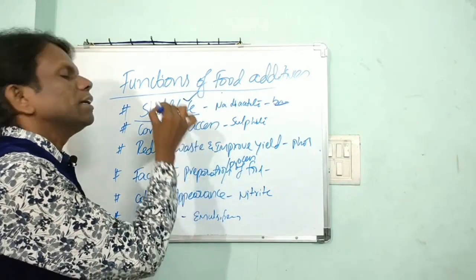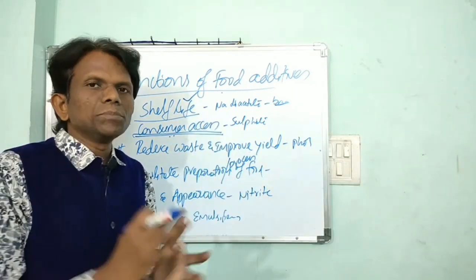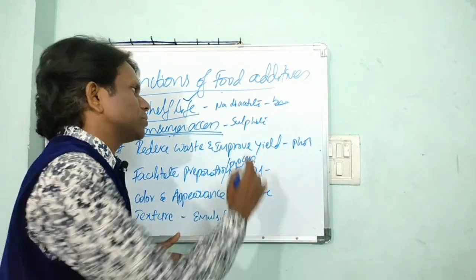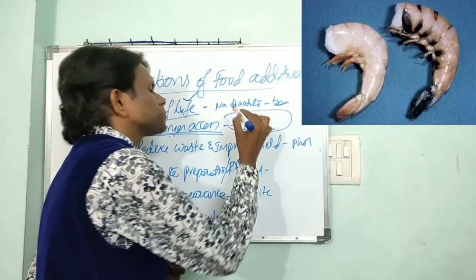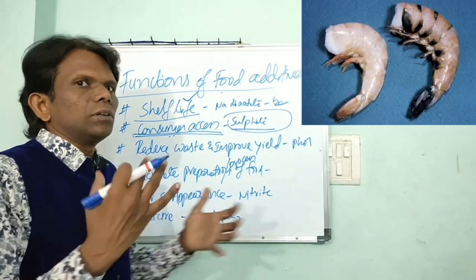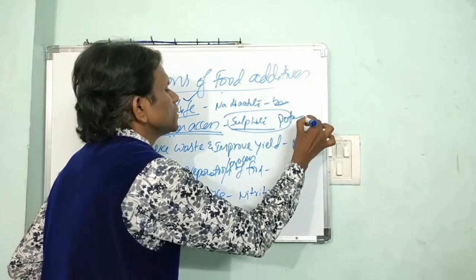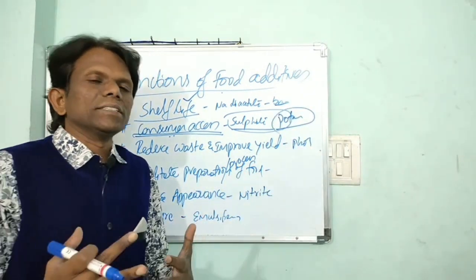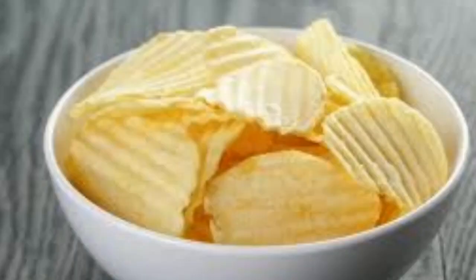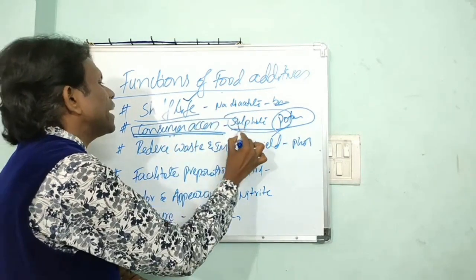The second function is to enhance consumer access. For example, shrimps after harvest are treated with sodium metabisulfate, which will prevent melanosis. Not only shrimps but also some agricultural foods like potato chips — browning forms very rapidly during potato processing. They treat potatoes with sodium metabisulfate so that the potato color will be retained as a good natural color. In such ways, food additives enhance consumer access.